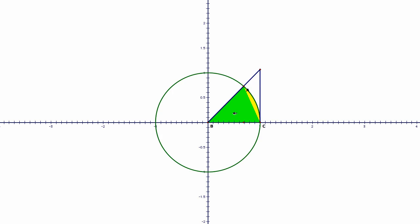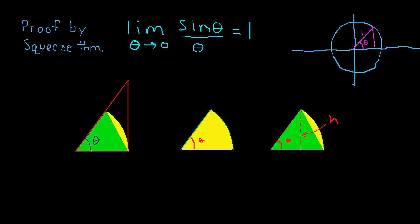By construction, the area of the big triangle is bigger than the area of the sector, which is bigger than the area of the green triangle. Let's keep that in the back of our mind. We can see that this area is bigger than this area, which is bigger than this area. So let's actually go out and find these different areas.